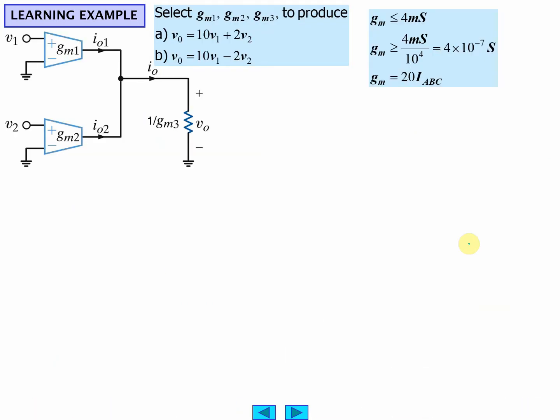Another OTA might do it. Now this is your summer circuit, and the problem is to produce this. So 10 V1 plus V2, so GM1 is going to be five times, or this current has to be about five times more than this current. There's our equation.